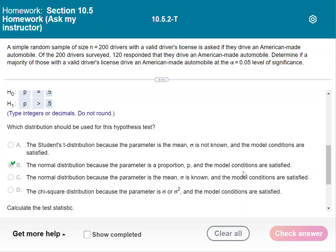And also we can assume that since we're only looking at 200 drivers out of probably all American drivers, we're definitely under 5% of the population. So it meets all those conditions. So we do have a normal distribution. That also needs to be a simple random sample, which it is.